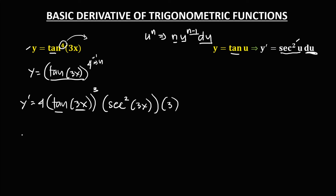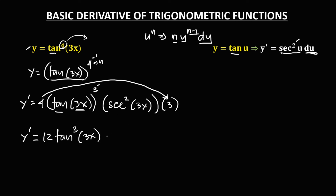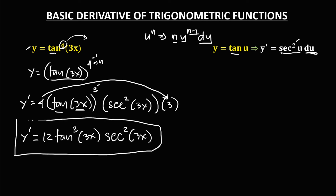Simplifying, we have y' equals — 4 times 3 is 12 — then we put the 3 on tangent, so we have 12·tan³(3x)·sec²(3x). So this is now the derivative.